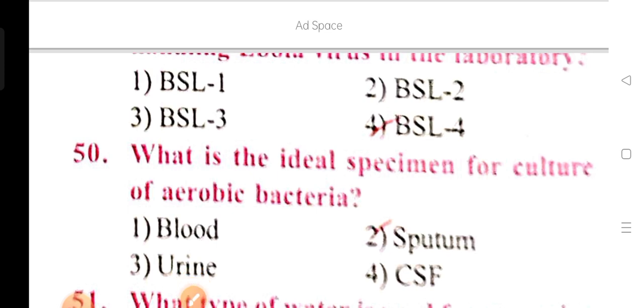Last question: What is the ideal specimen for the culture of aerobic bacteria? Options are blood, sputum, urine, and CSF, which is cerebrospinal fluid. The ideal specimen for aerobic bacteria culture is sputum test. Sputum test is the correct answer.